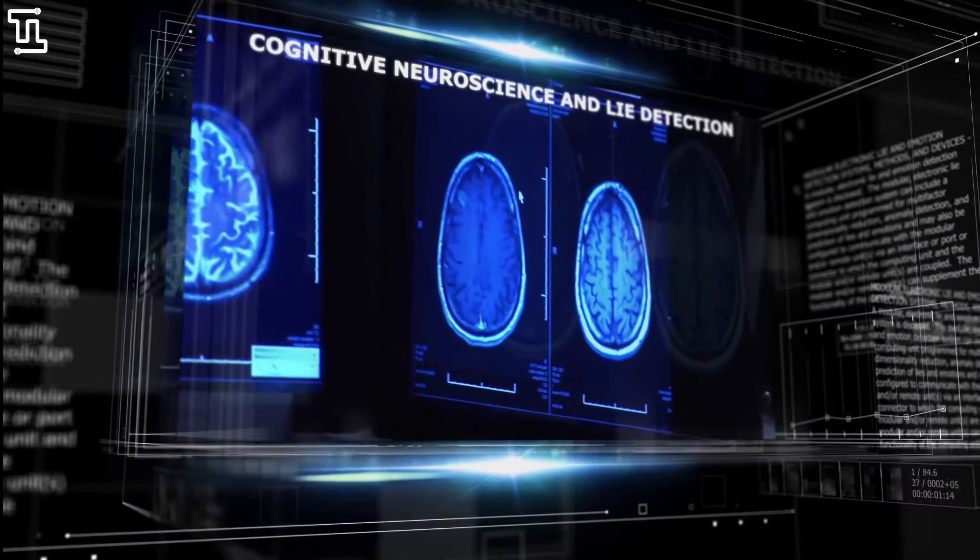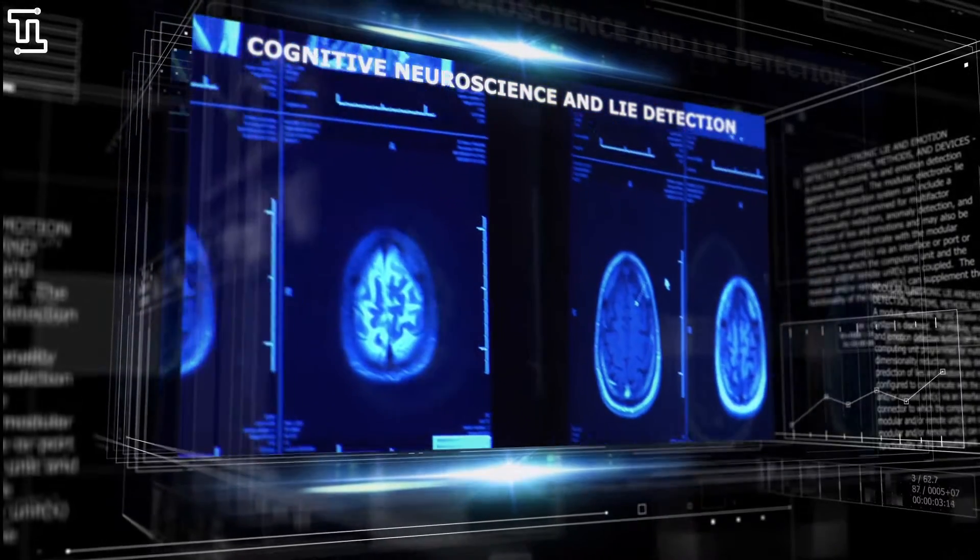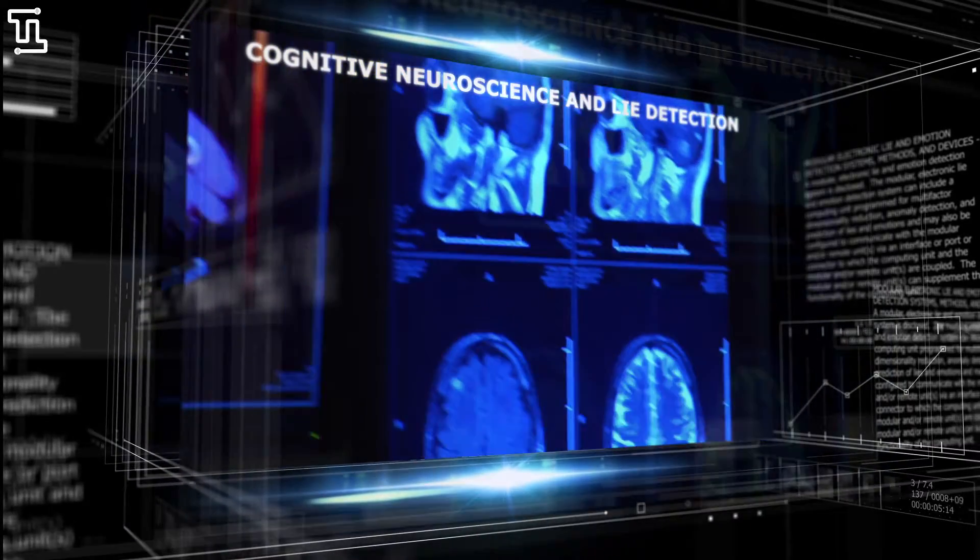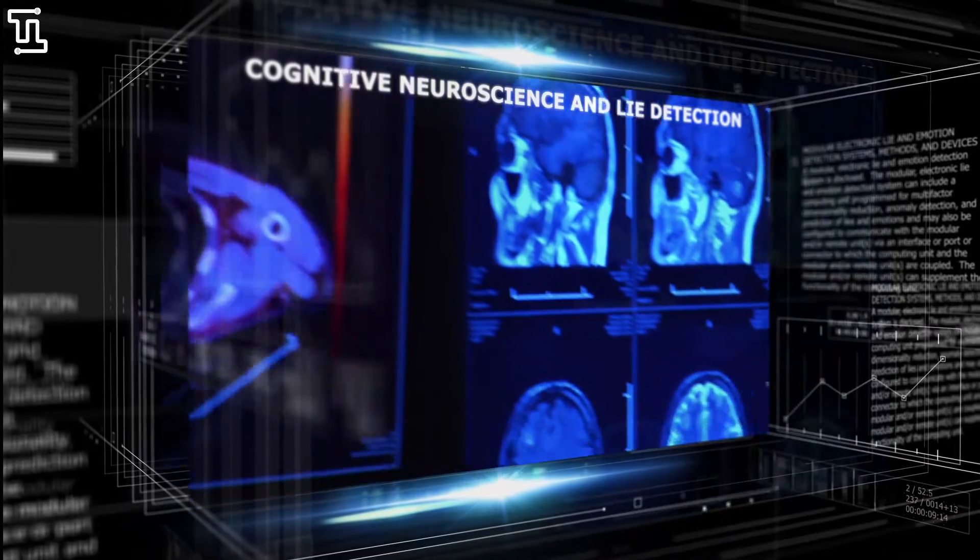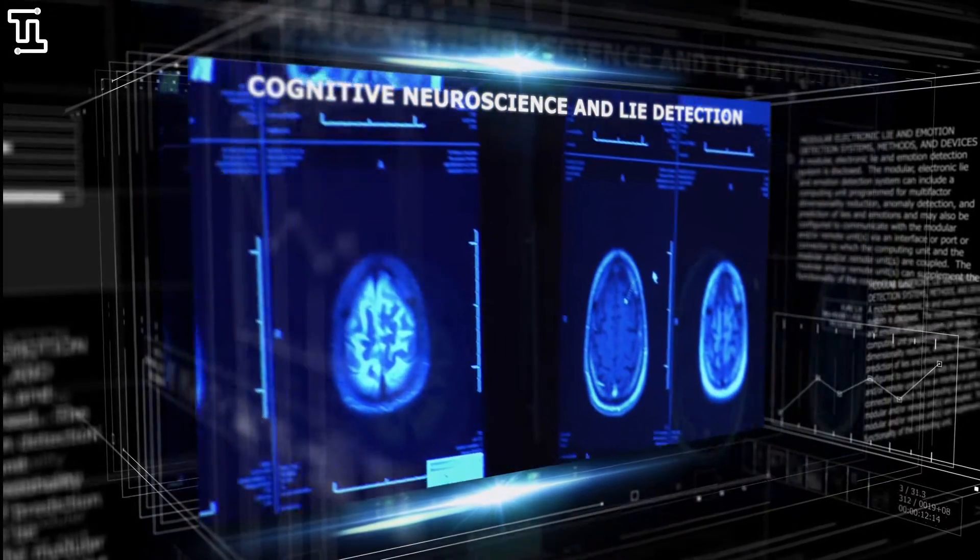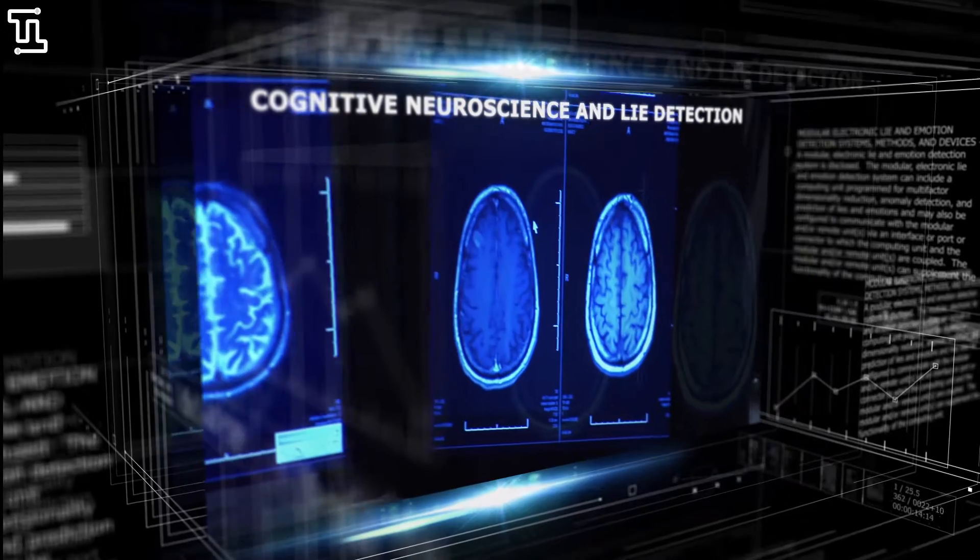Cognitive neuroscience has taught us that a good lie requires forethought and self-control. This increased brain activity results in physiological signs that humans can't cover up and Truth Tech can measure in a multitude of different ways.